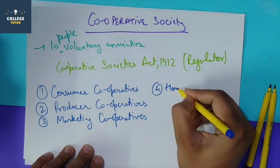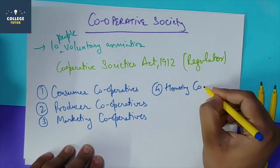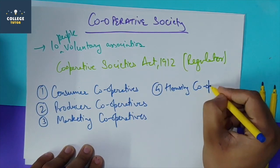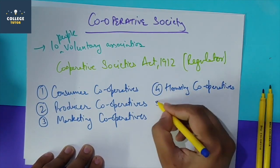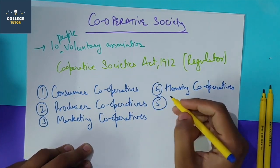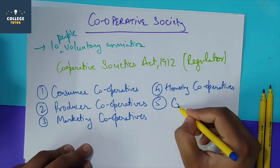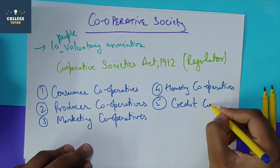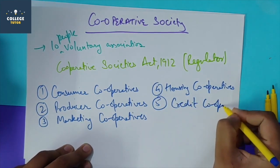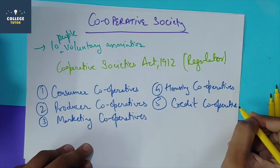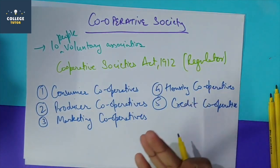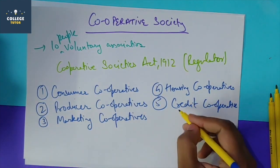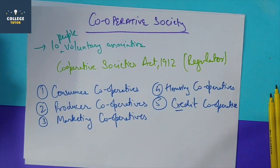Another type is housing cooperatives, which basically provide housing facilities to their members. Besides that, we have credit cooperatives, which as the name suggests, provide credit to members. Examples include cooperative banks. Credit cooperatives generally operate on a small scale.